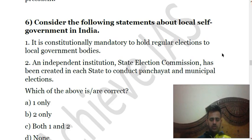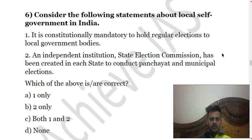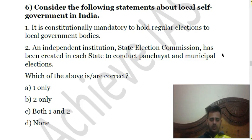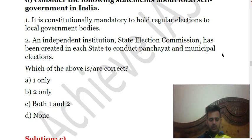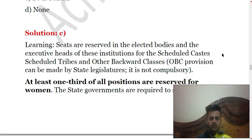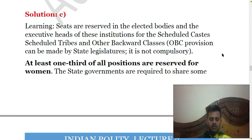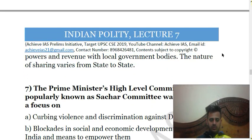The sixth question asks us to consider the following statements about local self-government in India. First, it is constitutionally mandatory to hold regular elections to local government bodies. Second, an independent institution — the State Election Commission — has been created in each state to conduct panchayat and municipal elections. Both statements are correct. The answer is C — both one and two are correct. Additionally, seats are reserved for SCs, STs, OBCs, and women — one-third of the seats are reserved for women.